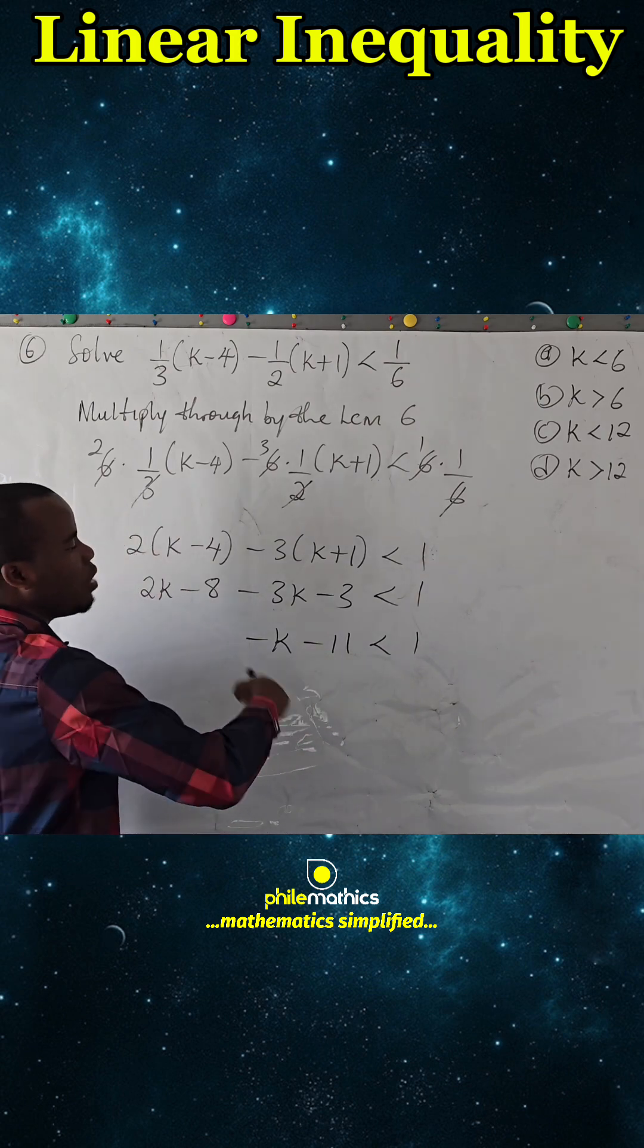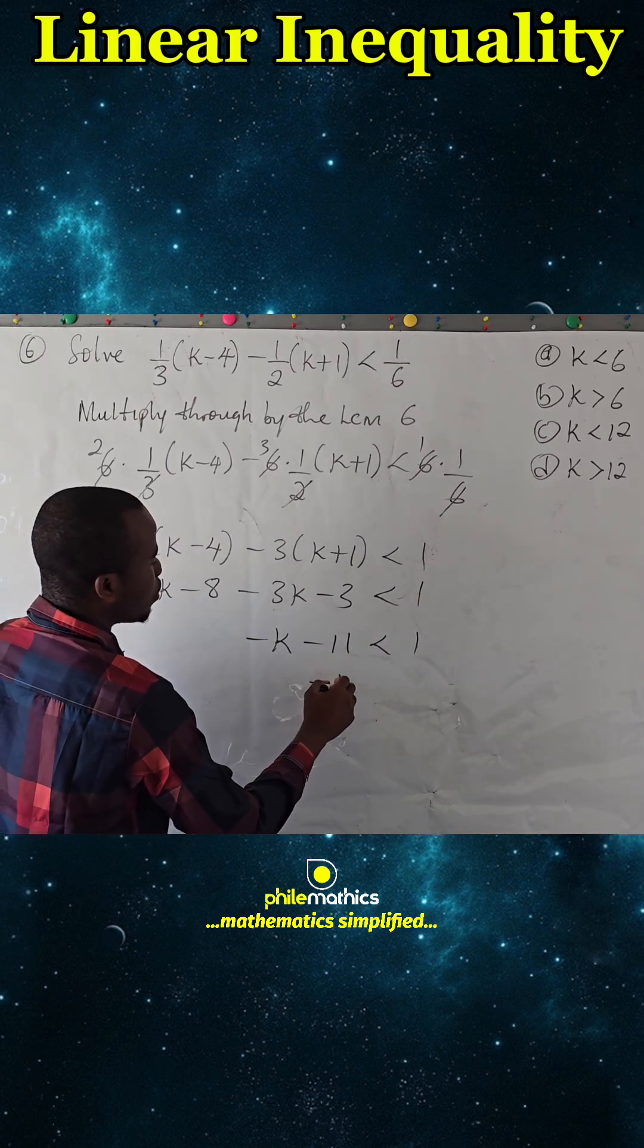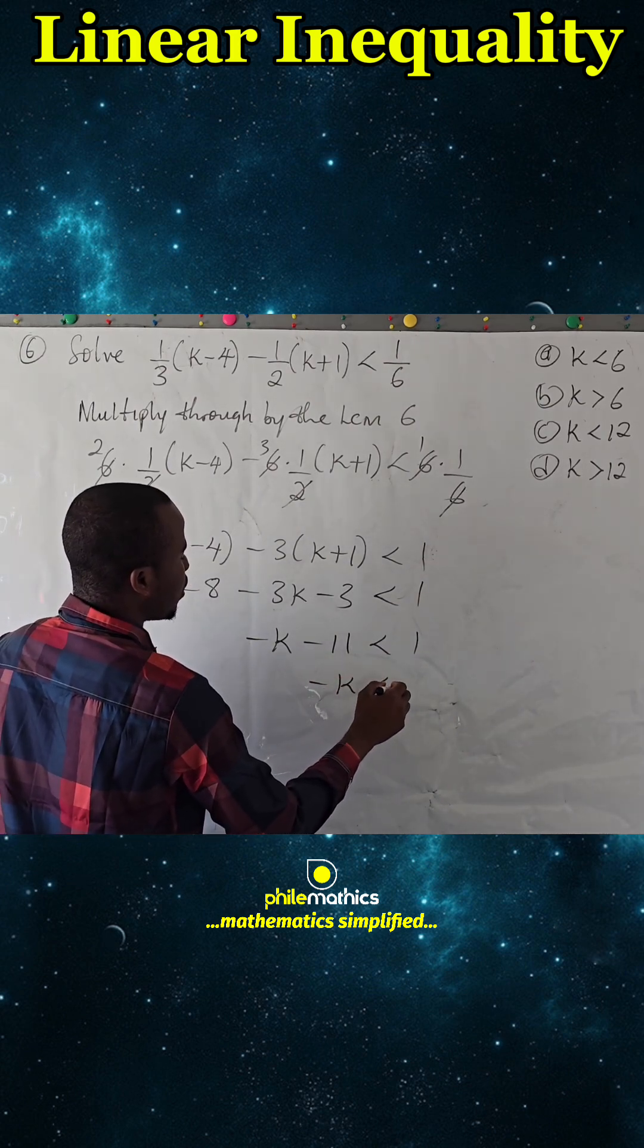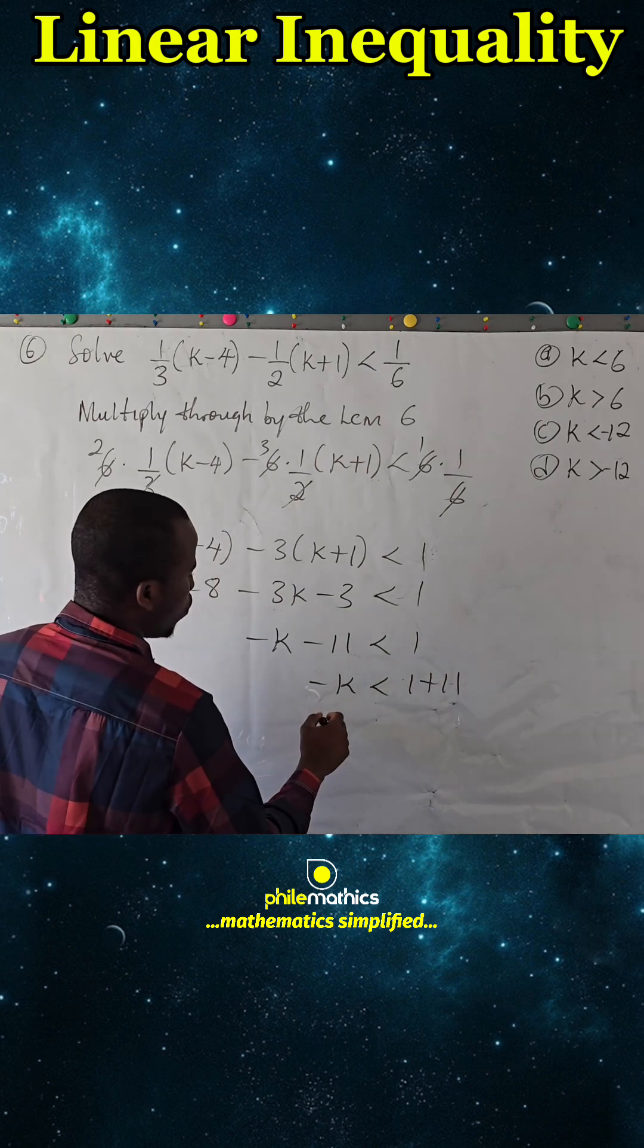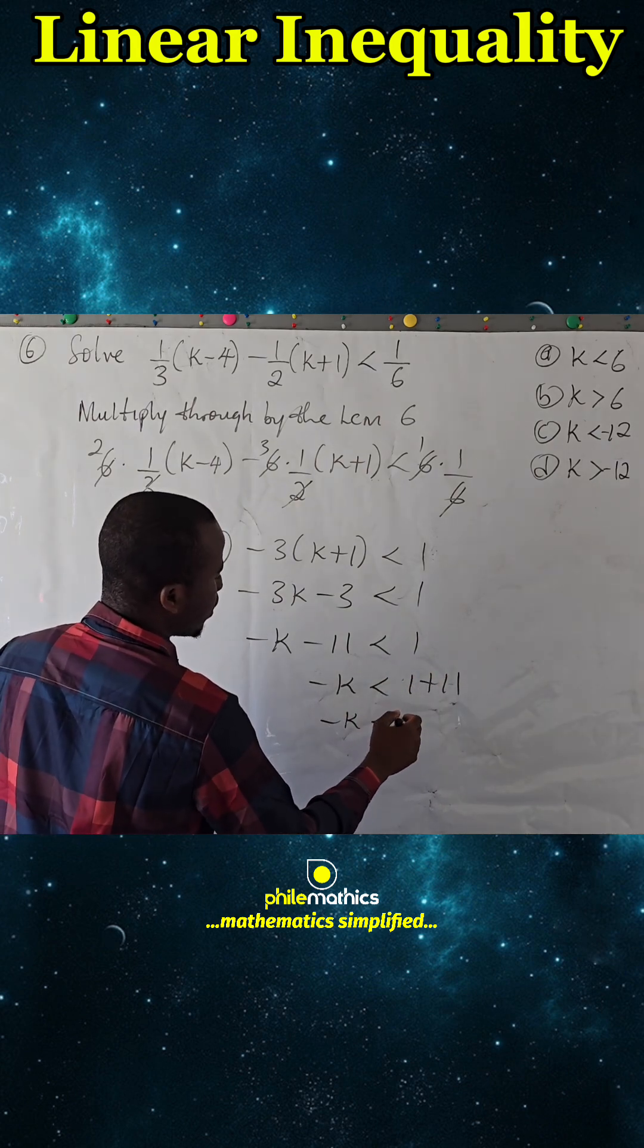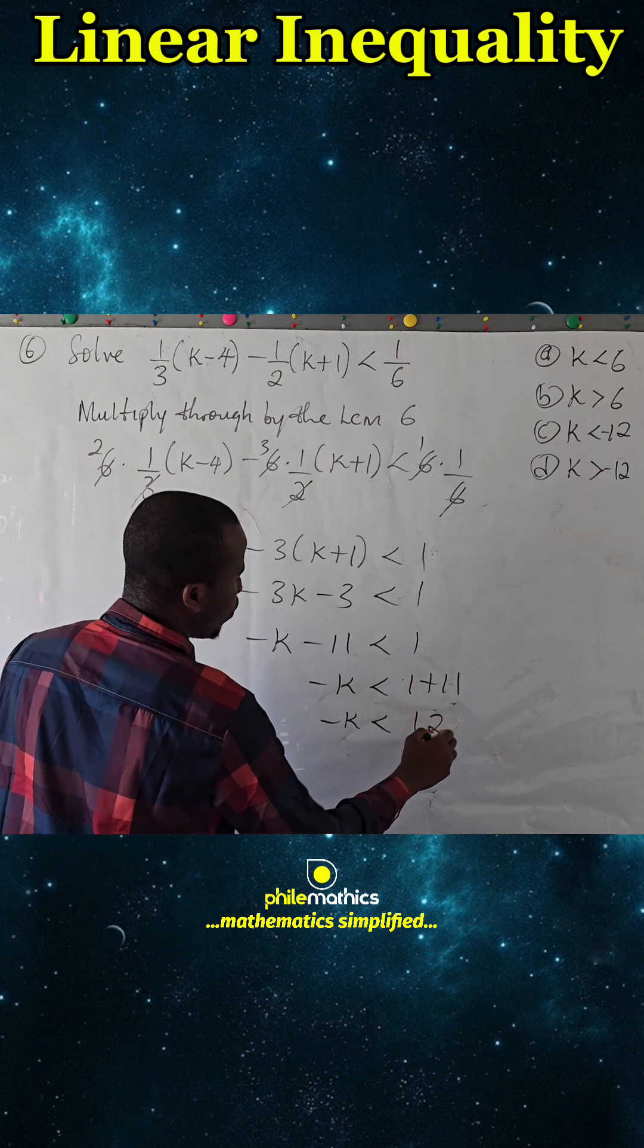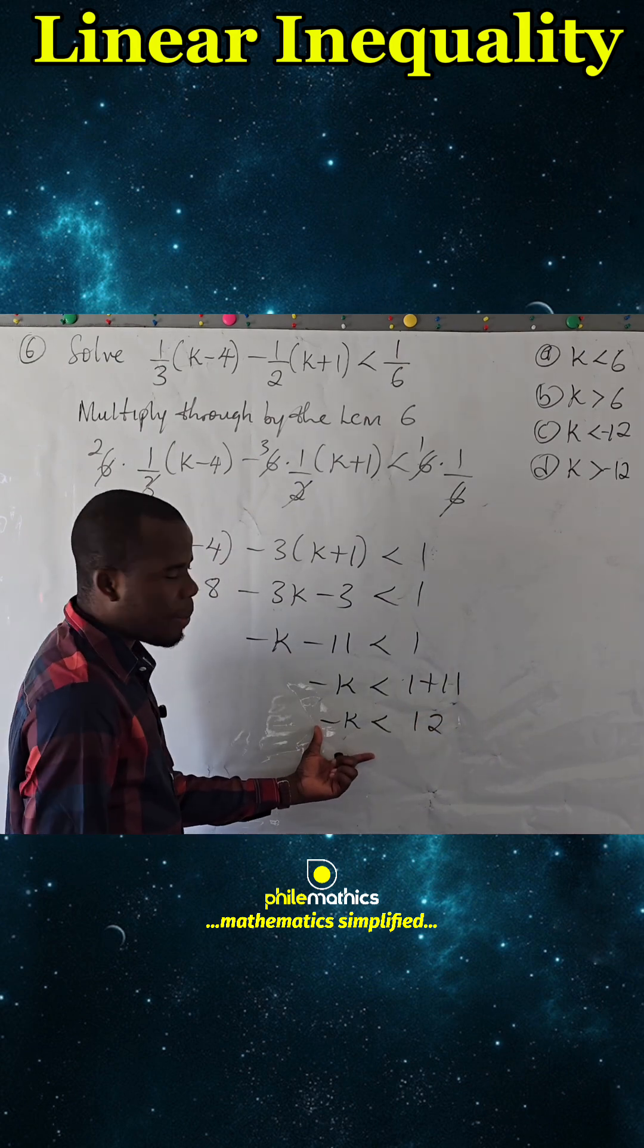We take minus eleven to the right hand side, so we have -k < 1 + 11, and so -k < 12. Now you divide both sides by minus one.